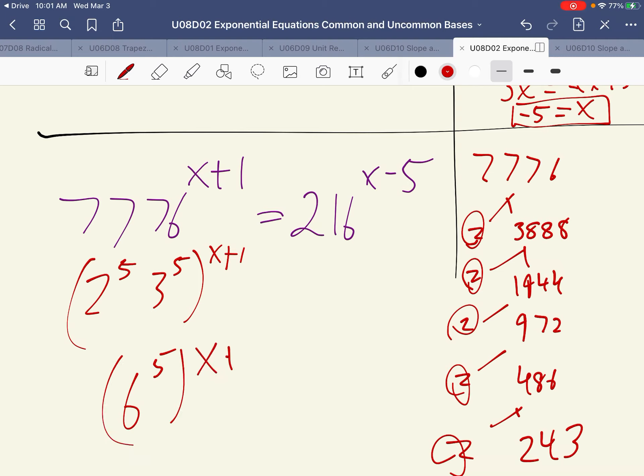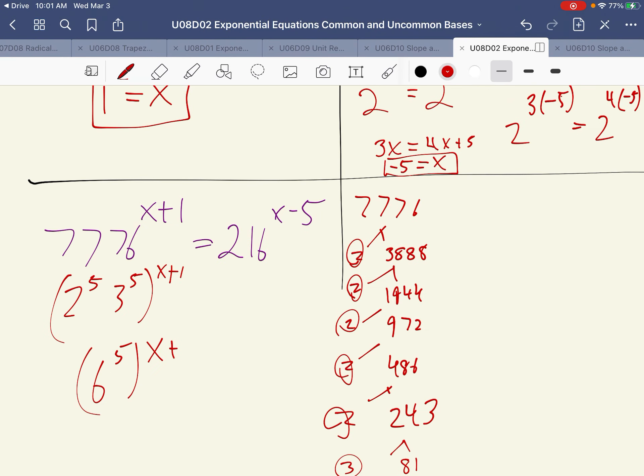So this is the reason this problem is a little more difficult is because 6 is the base. And you'll notice, because 6 wasn't a prime number, we spent a little bit more time on it than we would have normally. Now that we know that 6 is the common base, we'll be able to do that a little quicker for 216.